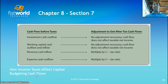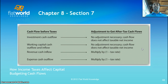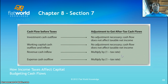For investment cash flows before taxes, no adjustment is necessary because the cash flow does not affect taxable net income. Working capital cash outflows and inflows are also not affected, so no adjustment is necessary. But for revenue cash inflows and expense cash outflows, you multiply by one minus the tax rate. If the tax rate is 40% — or 0.40 in decimal form — then one minus 0.40 equals 0.60, so you multiply by 0.60.